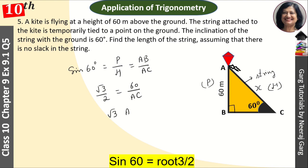Root 3 AC is equal to 2 into 60. Then AC is equal to 2 into 60 upon root 3. We will rationalize it.